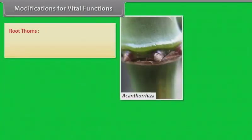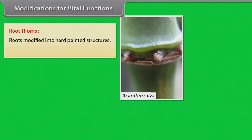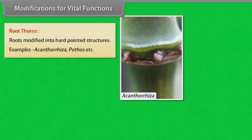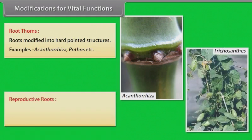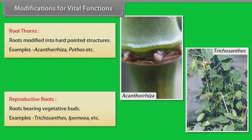Root thorns: Roots modified into hard-pointed structures. Examples: Acanthorrhiza, Pothos, etc. Reproductive roots: Roots bearing vegetative buds. Examples: Trichosanthes, Ipomoea, etc.